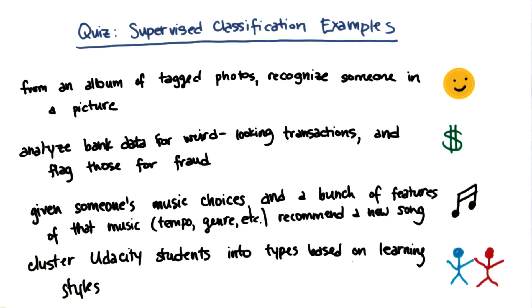The first example of recognizing someone's picture from a bunch of tagged photographs is definitely a supervised classification example. This is something that Facebook does all the time when it does recognition on the photos that you upload there.